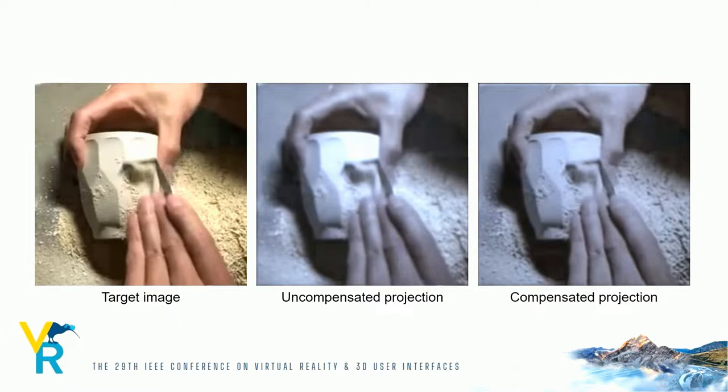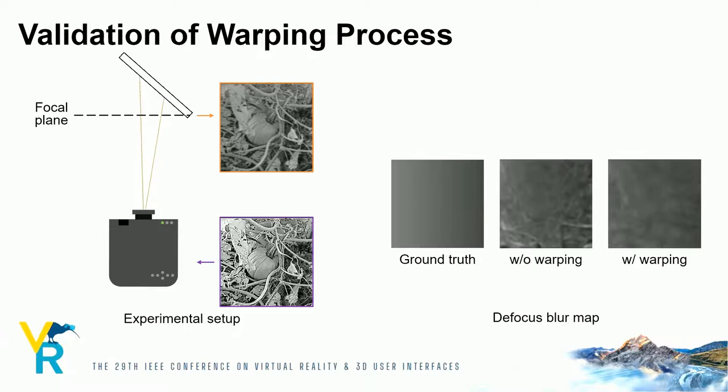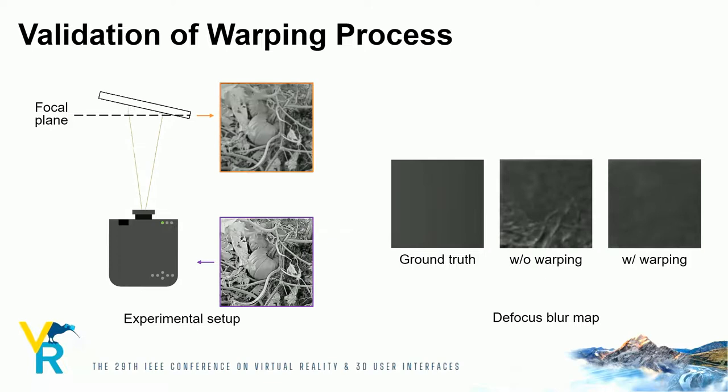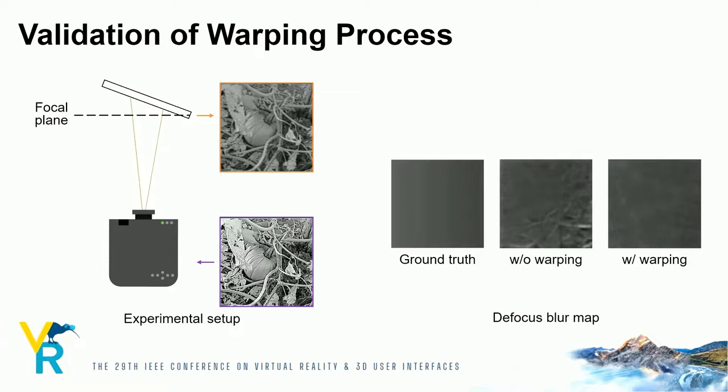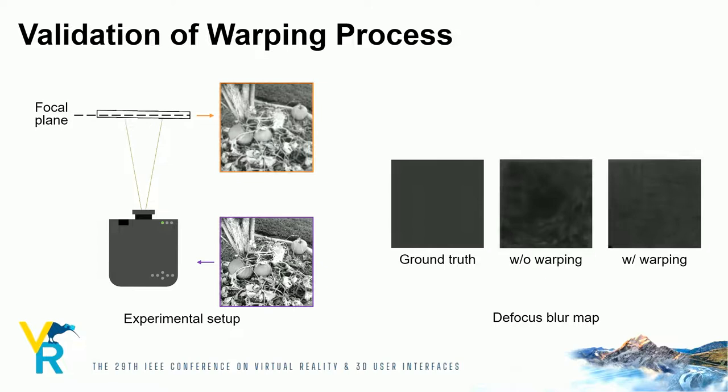We will show the usefulness of the warping process for pseudo-projection. In this example where an image is projected onto a rotating surface, the left side of the projected result gets blurred according to the rotation. As shown in the result, the estimated defocus blur map is less affected by the projected image contents when the dataset is generated by incorporating the warping process.